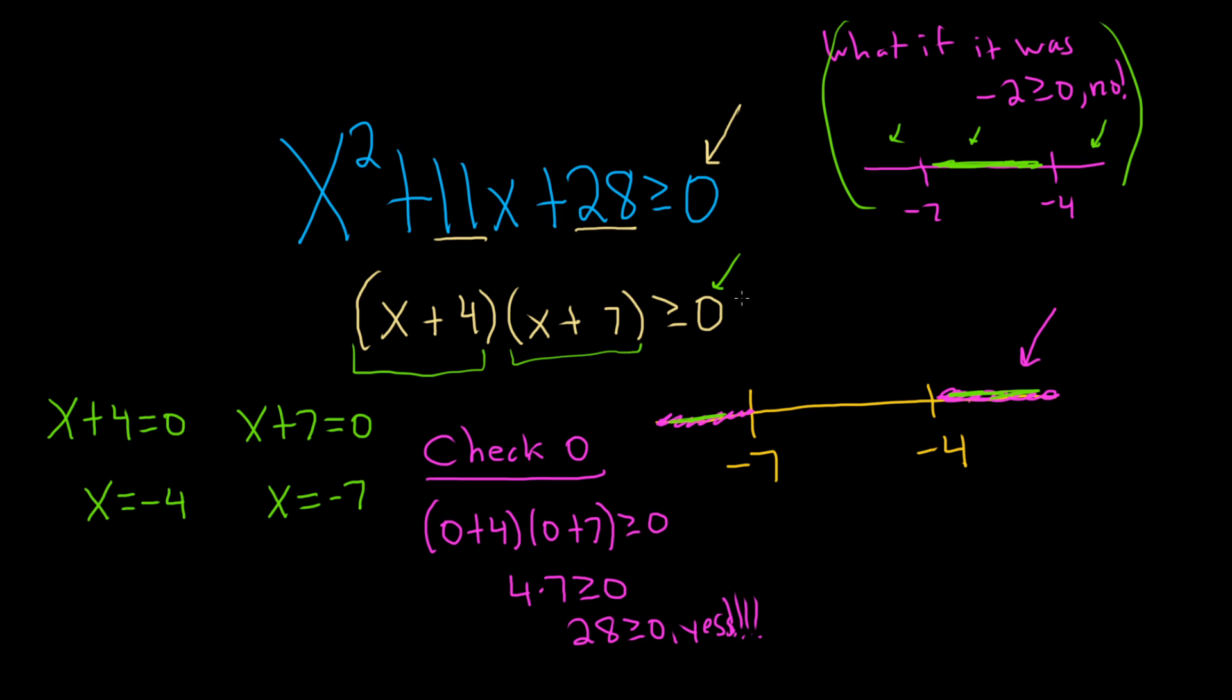The last part is to write the answer down. So because we have equality here, we're going to use brackets. And remember, the brackets always face the shading, okay? So now from the picture, we can get the answer. So it'll be negative infinity all the way to negative 7 bracket union negative 4 all the way to infinity. And that would be the final answer. I hope this video has been helpful.